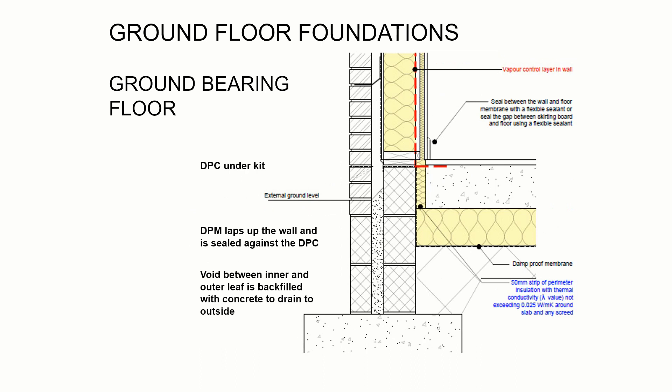For a ground-bearing floor it's slightly different. Only the weight of the timber kit is carried down the inner leaf of the substructure, whereas the floor slab — the large element on the right of the screen — doesn't connect with that. We've got insulation blocking the load path there, so it puts all its loads down into the ground rather than into the foundation.